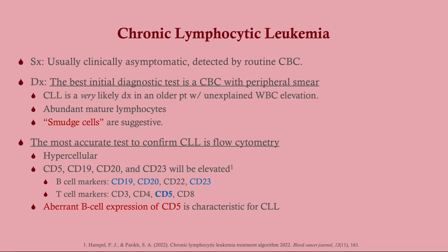It's usually detected incidentally — a patient coming in for routine labs or feeling unwell for unrelated reasons. The best initial diagnostic test, if you suspect a chronic leukemia or lymphoma, is a CBC with peripheral smear.